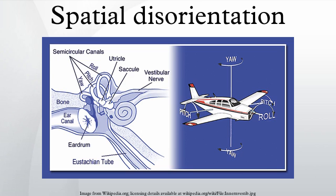In many cases, illusory visual inputs such as a sloping cloud deck can also lead to misjudgments of the vertical and of speed and distance, or even combine with the non-visual ones to produce an even more powerful illusion. The result of these various visual and non-visual illusions is spatial disorientation.